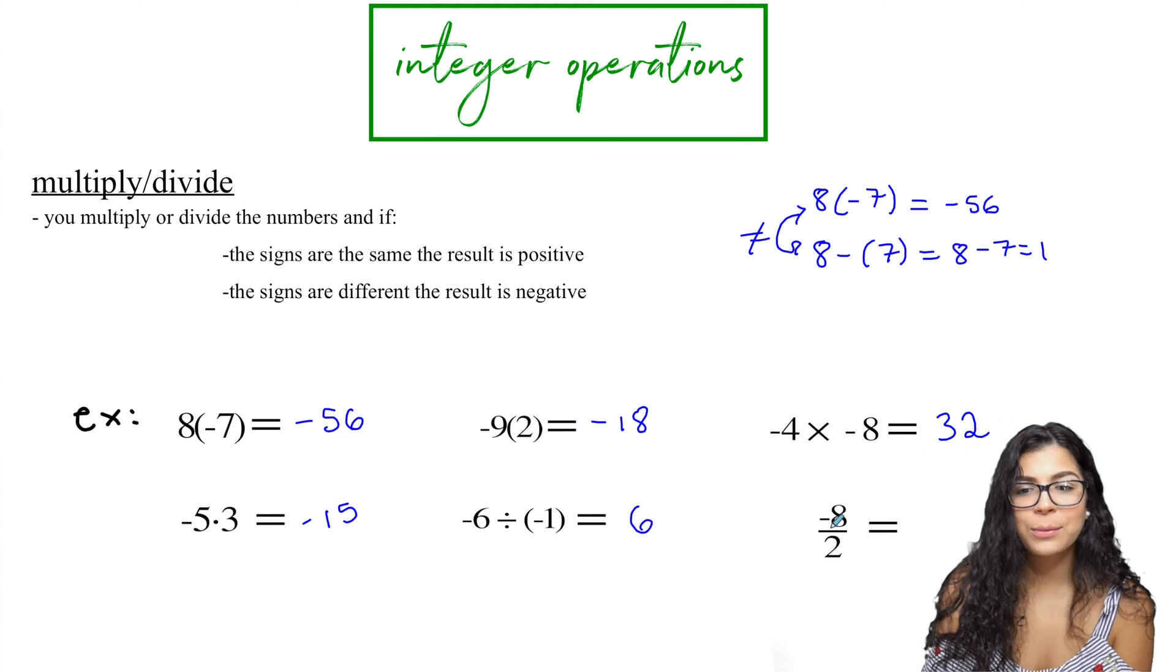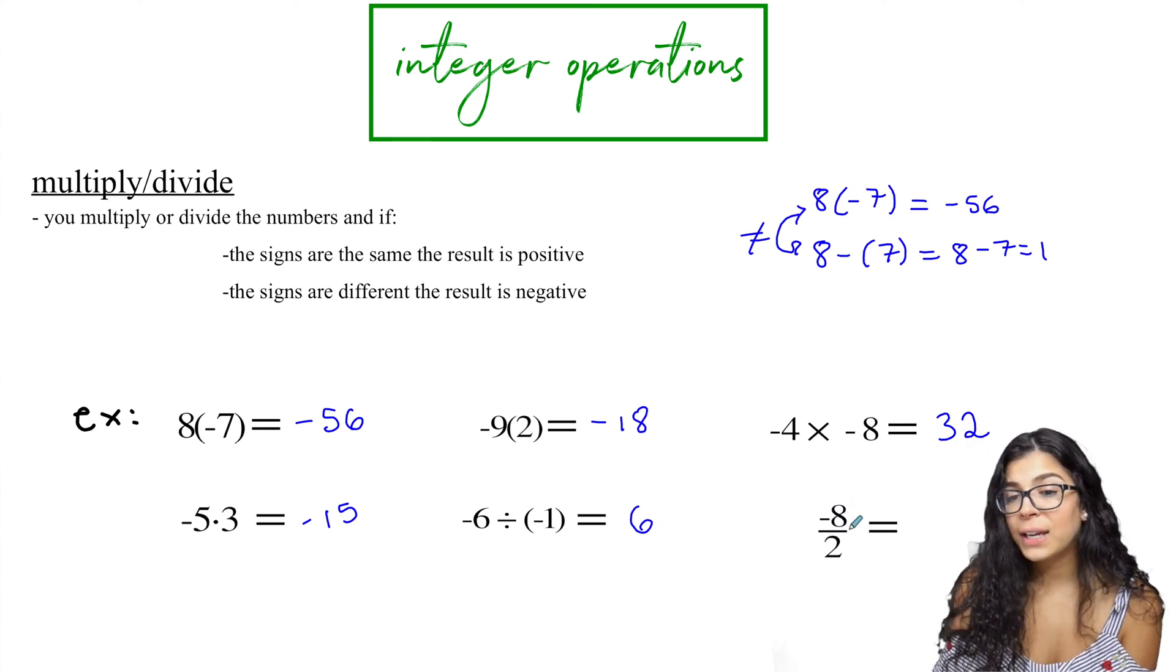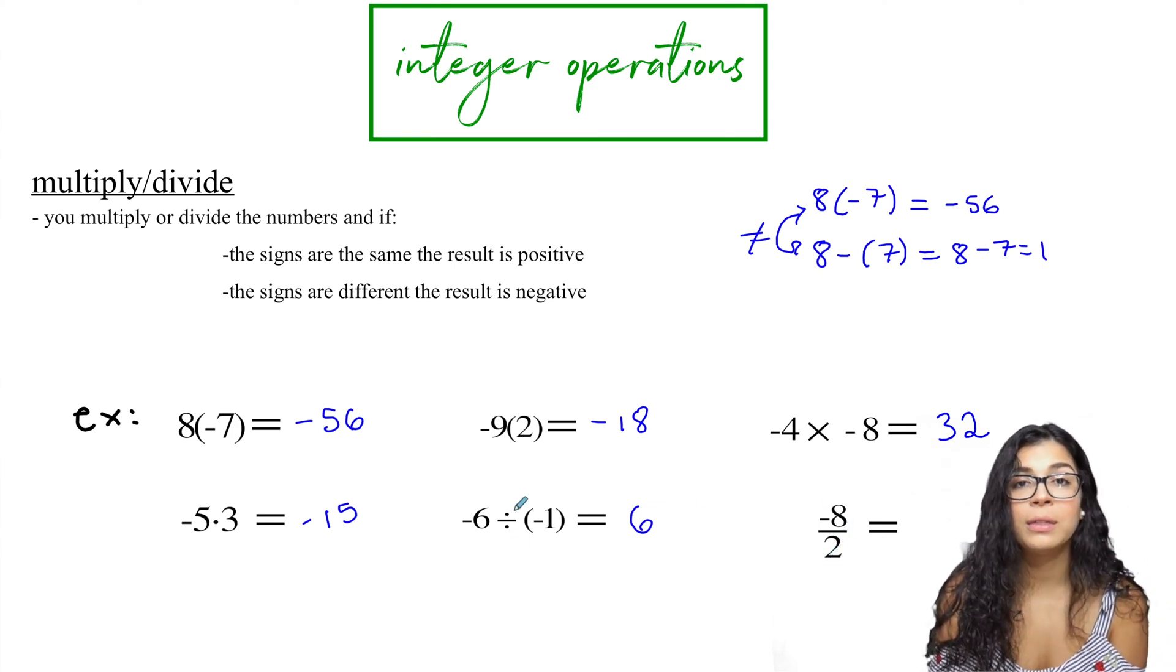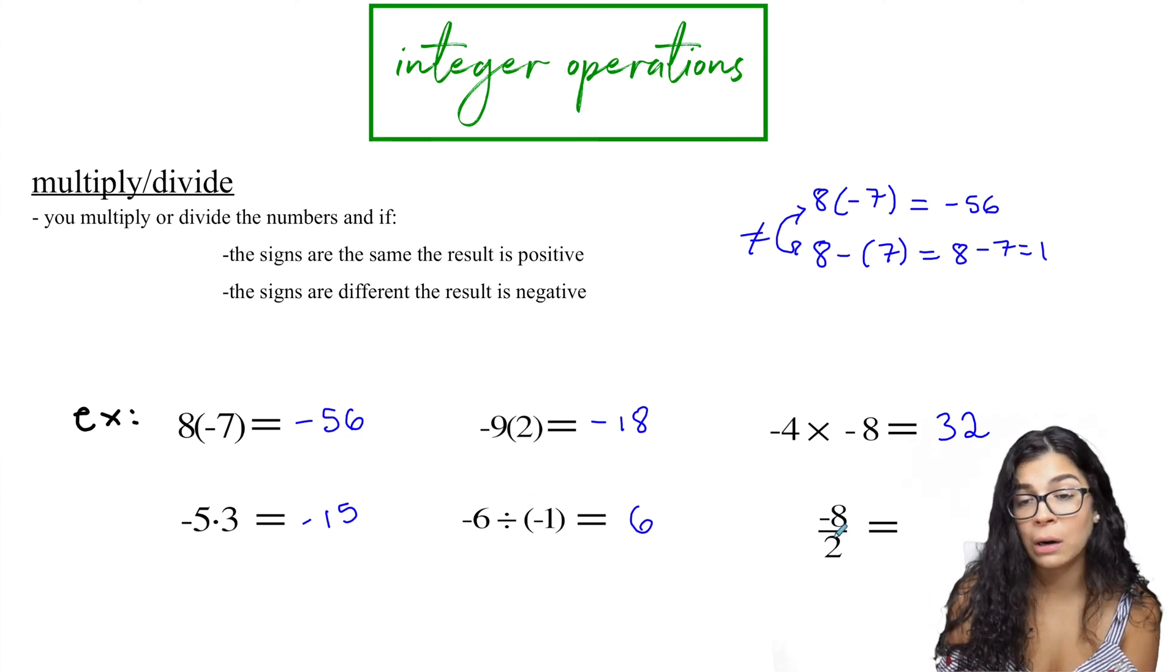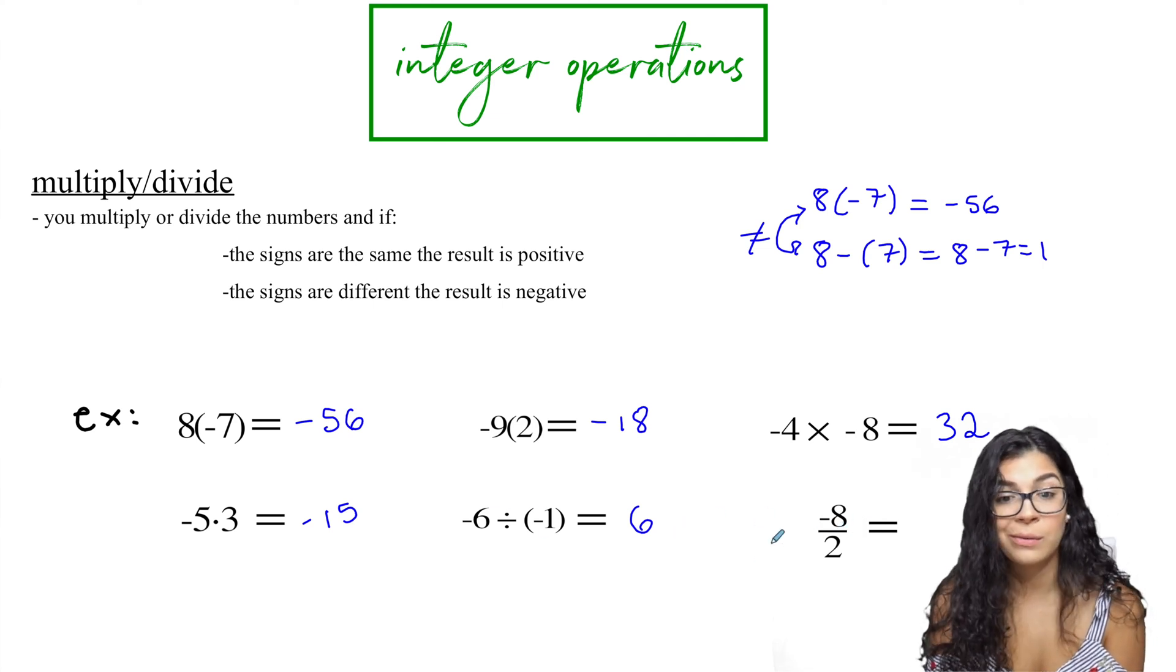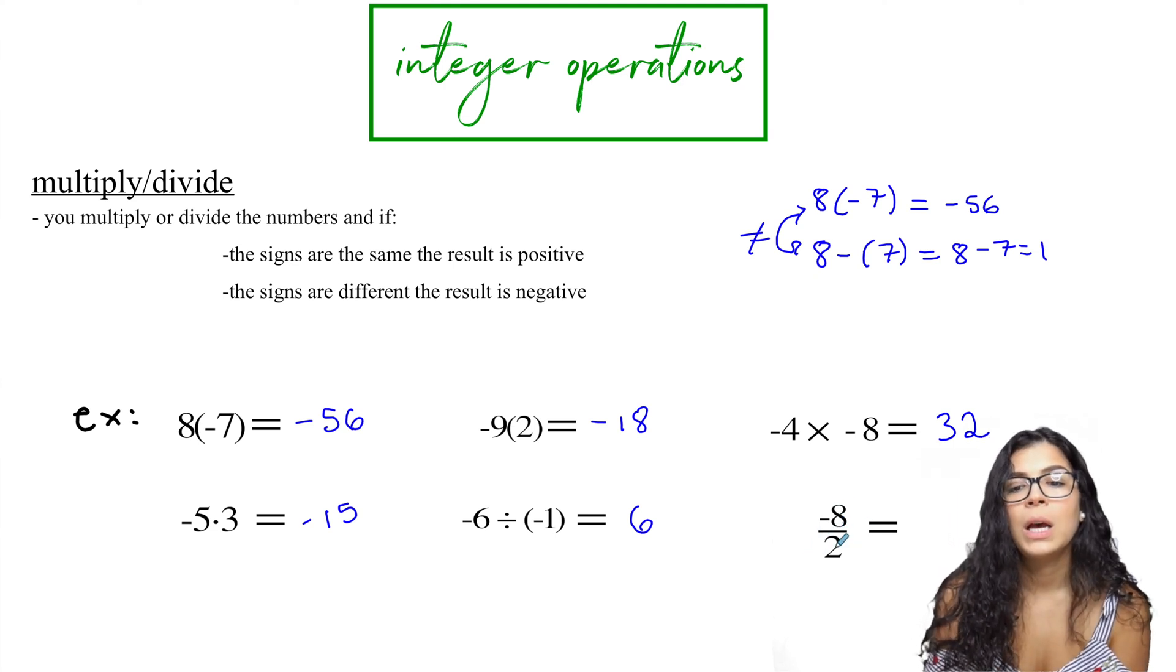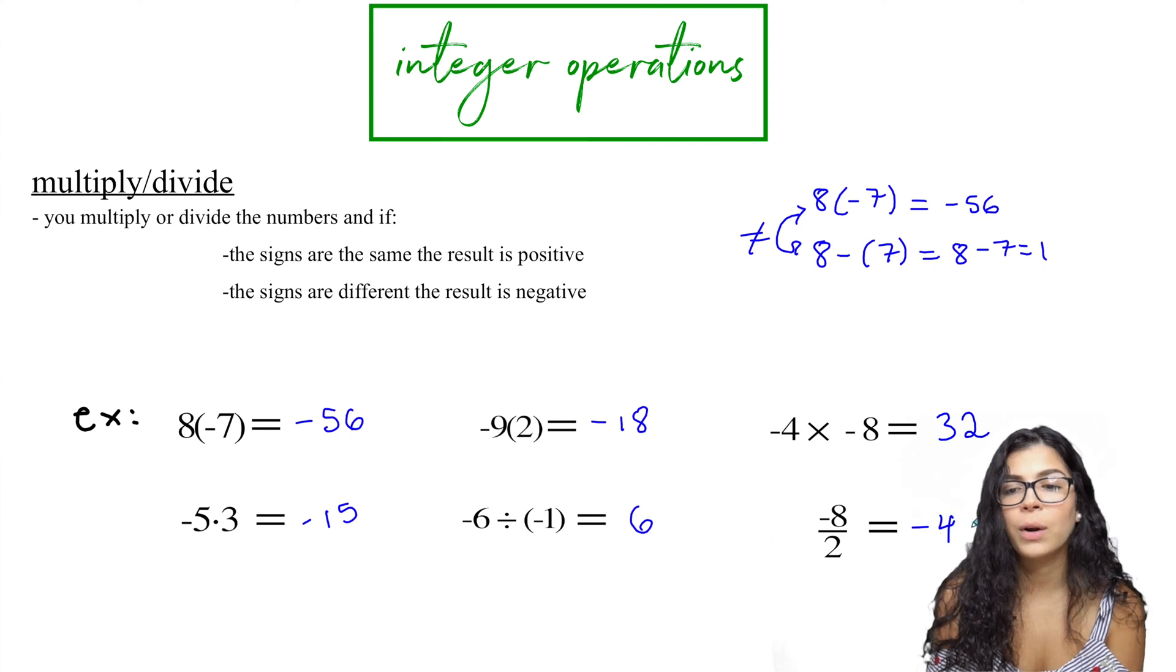Okay. Last one. Woo hoo. We're done. Almost. Negative eight divided by positive two. I want to point out, I also have here division symbol means divide, but fraction bar also means divide. So these are like the two ways that you write division, with the division symbol or with a fraction bar. Fraction bar means division. Different signs. So my answer will be negative and eight divided by two is four. Yay. We're done.